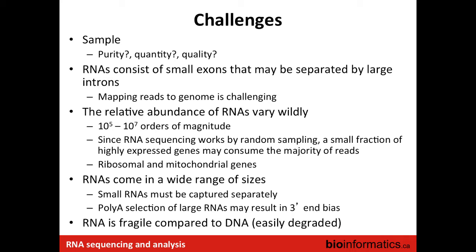How much data you produce is fundamentally influenced by how much you care about sensitive detection of transcripts present at relatively low copy number. This is quite different from DNA sequencing where you have a bunch of chromosomes all present in whatever the normal ploidy status is — in human, all there in a diploid state. So you can expect approximately even random sampling across the whole reference genome and don't have to worry about differential abundance between chromosomes.